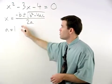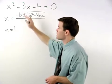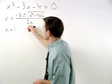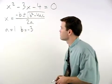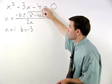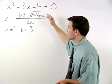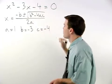The value for b comes from the coefficient on the x term, which in this case is negative 3, so we say that b equals negative 3. And the value for c comes from the constant term, which in this case is negative 4, so we say c equals negative 4.